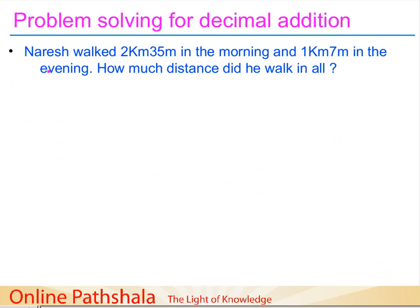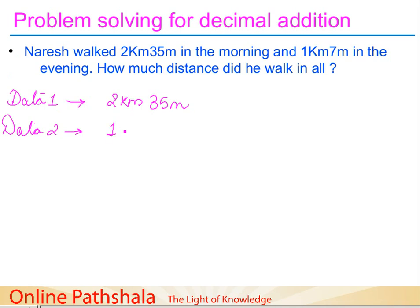Let's do one more problem. Naresh walked 2 kilometers 35 meters in the morning and 1 kilometer 7 meters in the evening. How much distance did he walk in all? Data 1: Naresh walked 2 km 35 m in the morning. We convert to kilometers: since 1 meter = 1/1000 kilometer, 35 meters = 0.035 km, so 2 km 35 m = 2.035 kilometers.